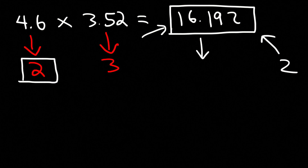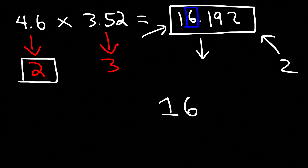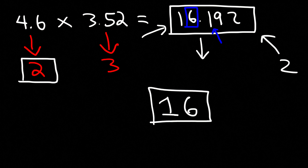Writing 16.192 from left to right, the first two digits — 1 and 6 — give us two significant figures. We look at the next digit to decide whether to keep the 6 or round up to 7. If it's 5 or more, round up; if it's 4 or less, keep the 6. Since the next digit is 1, we round down, so our answer is 16.